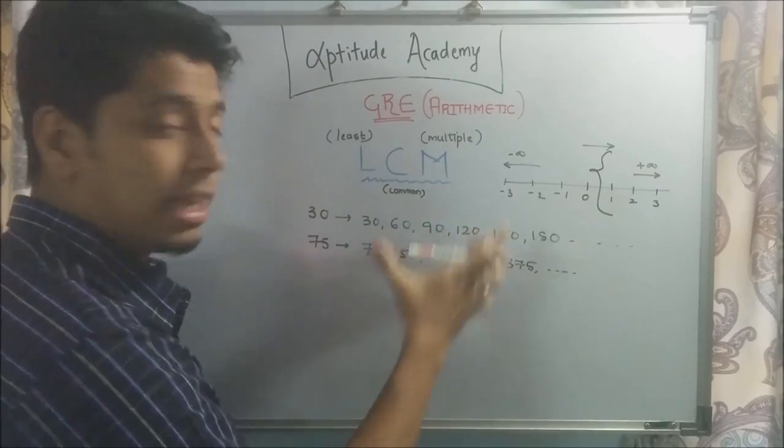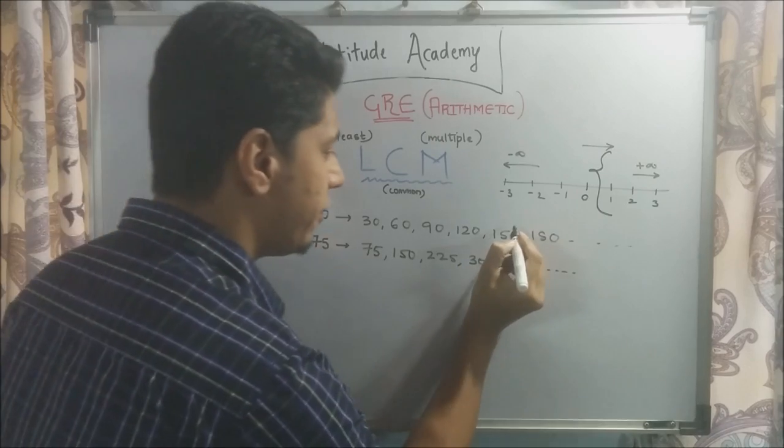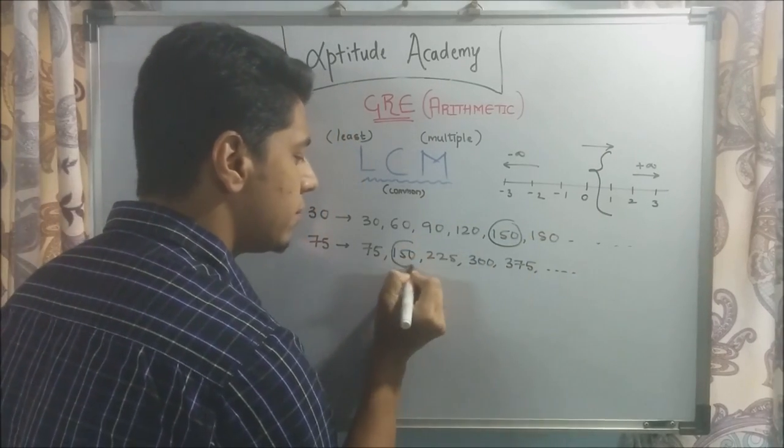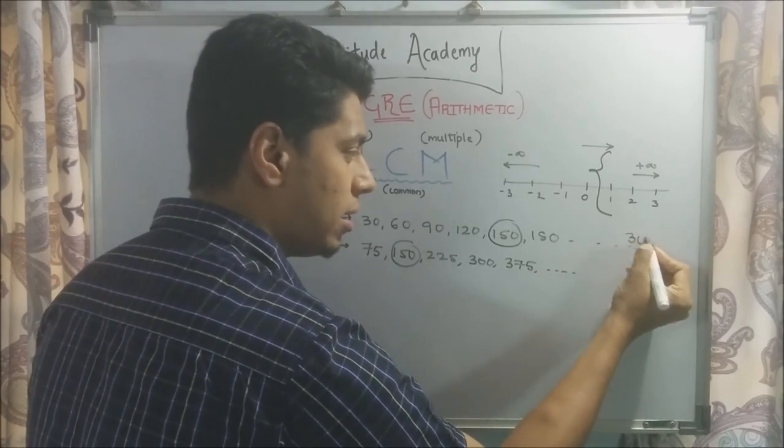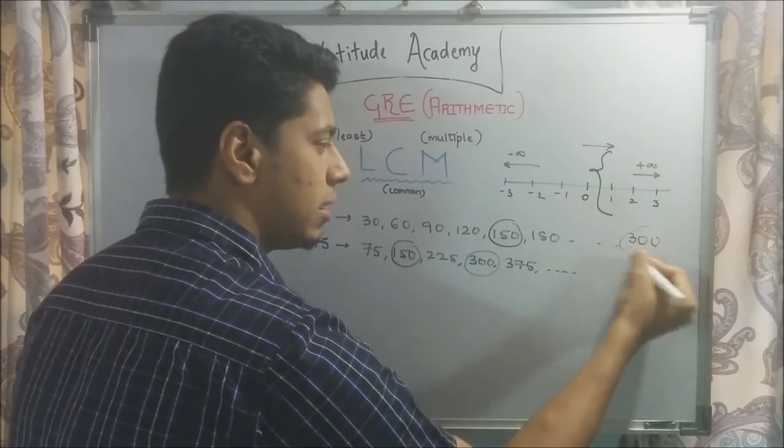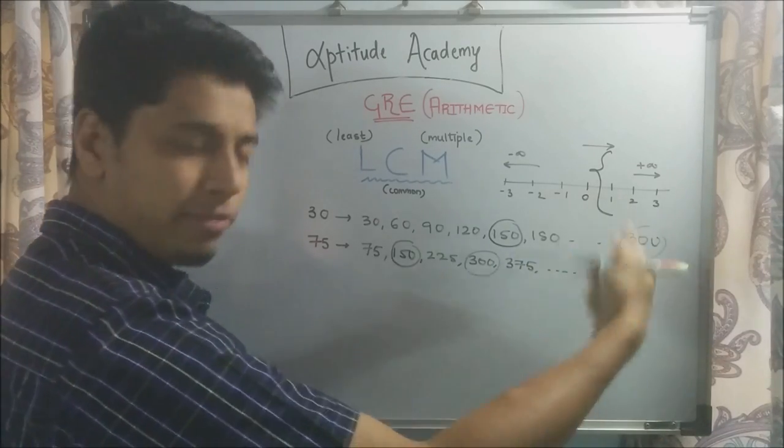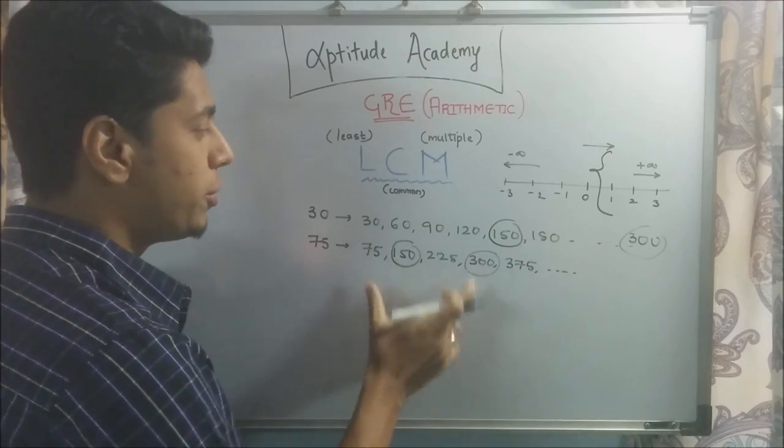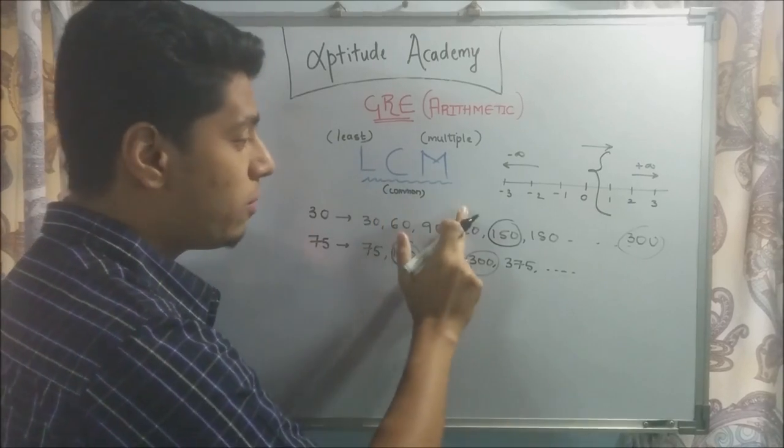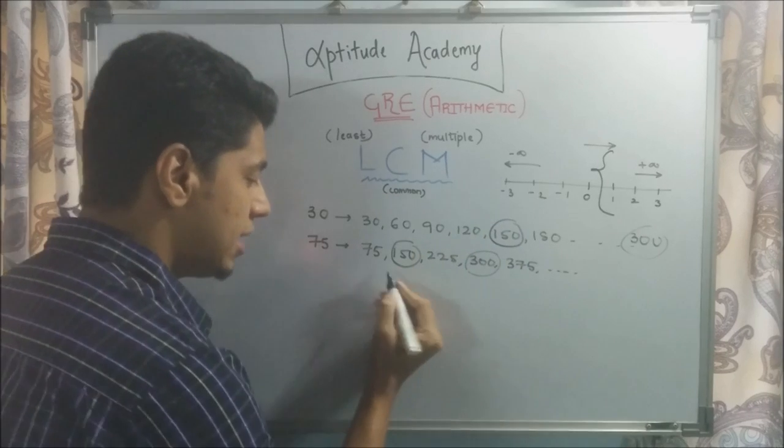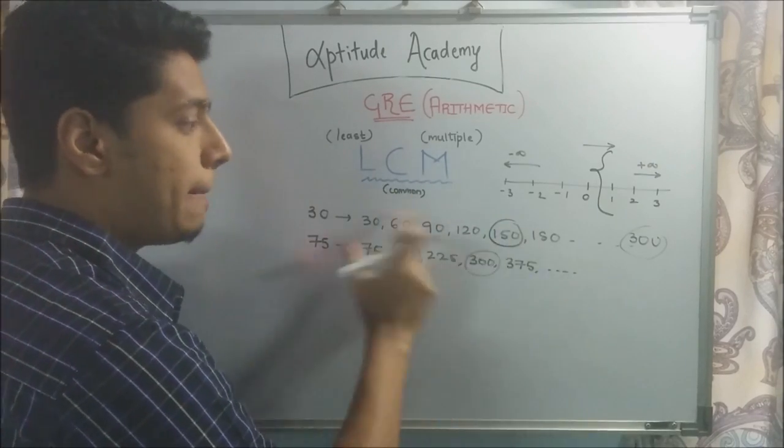Now we've written down the multiples. Next is C, common. What are the common multiples here? Do you have 75 anywhere? No. 150 do you have? Yes, you have 150. So we're going to circle 150. Do we have anything else? 30 into 10 will be 300, so you will have 300 somewhere here and you can circle this. Then we've circled the common ones. Now for the final step, you're going to select the least out of these common ones. So if you have 150 and 300, which is the least? 150. So this implies 150 is your least common multiple.